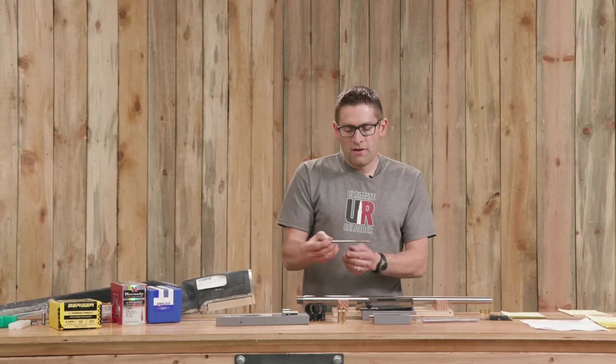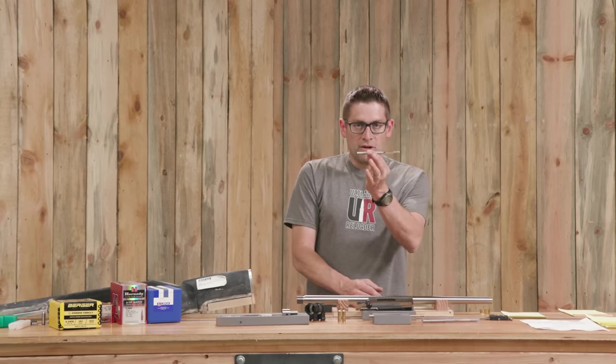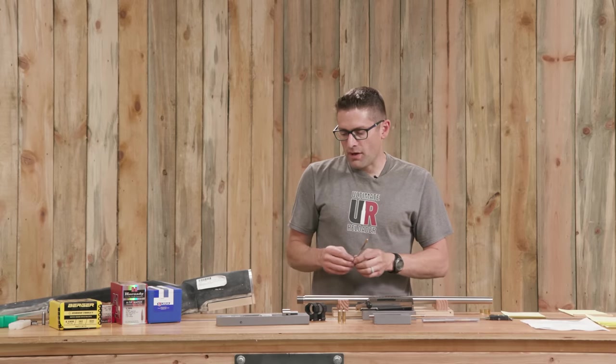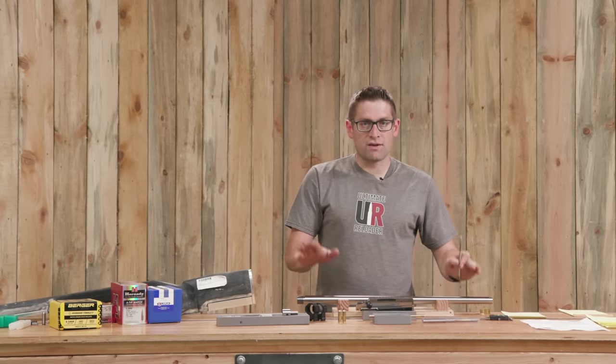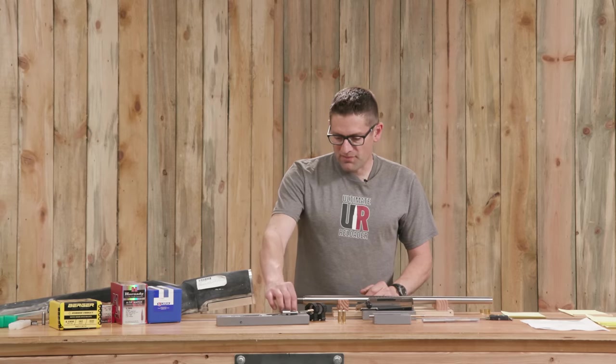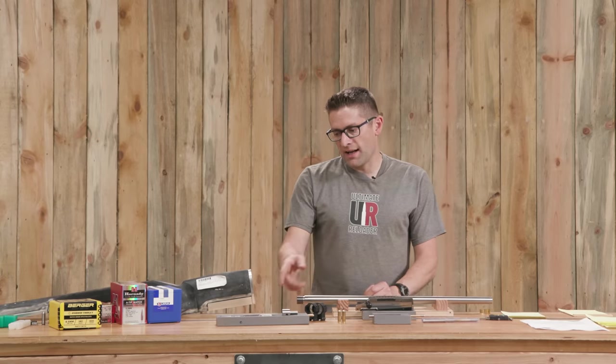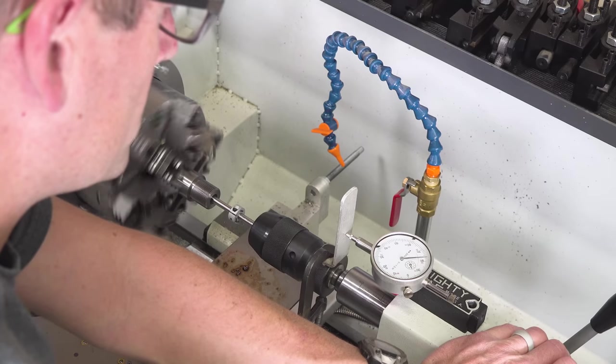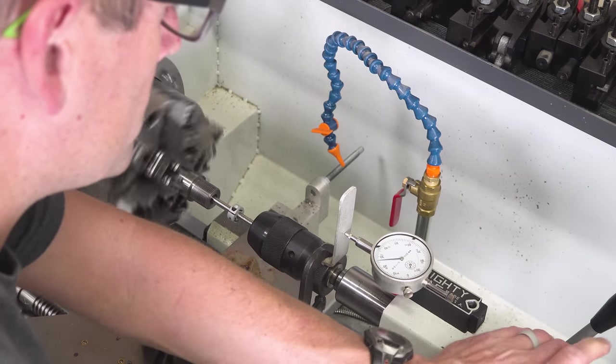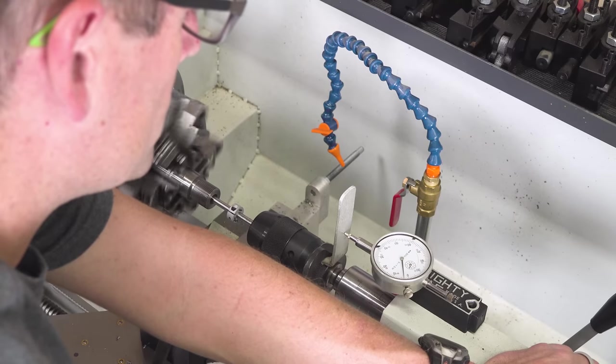So after the main portion of the chambering for the body and the neck, it was time to get out the throating reamer. This is another Treble reamer. These are six flute reamers and this is a four groove Krieger barrel. So that's a good combination in terms of minimizing chatter.